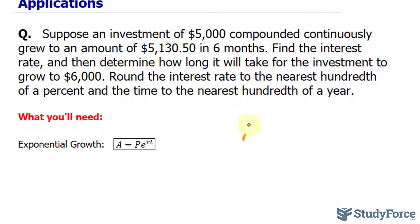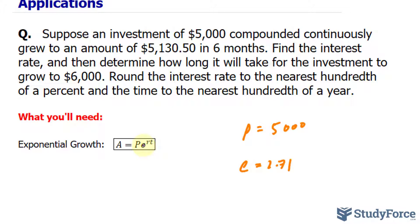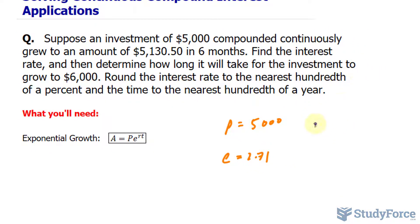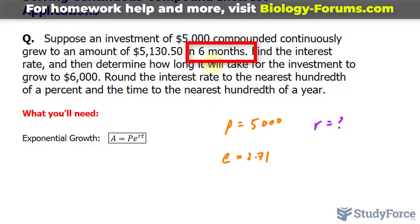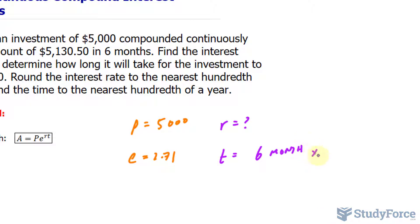We're told that the investment — the principal — happens to be $5,000. So we'll represent P as the principal, the starting point of $5,000. E is approximately 2.71, but make sure to use the button on your calculator which gives you more decimal places. R represents the interest rate as a percentage, and that's what we're looking for. The time is 6 months, but interest is always measured per year, so T needs to be in years. Converting 6 months: multiply by 1 year over 12 months, which gives us 0.5 years.